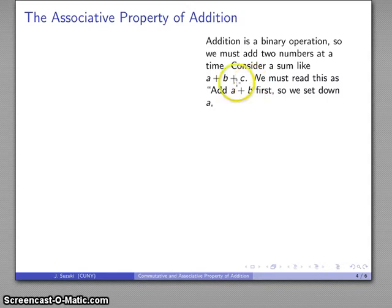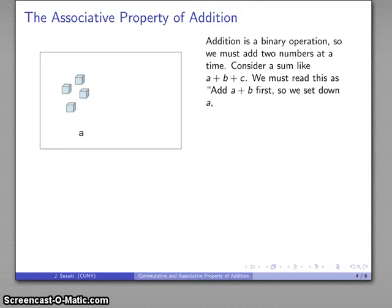we have to read this left to right. This says take a and add b to it. So I'll set down a, I'll add join a set b, so here's my representation a plus b, and then I'm going to then, to that set, add c. So there's a plus b plus c, and there's my sum.